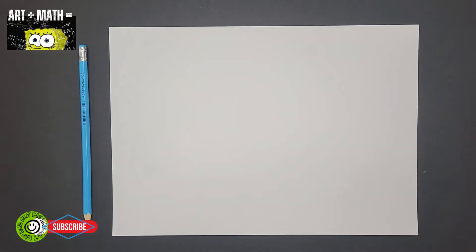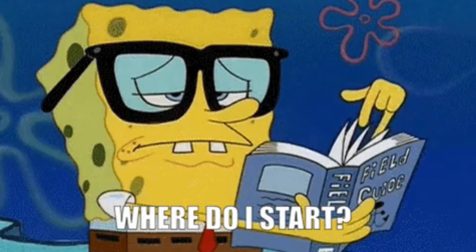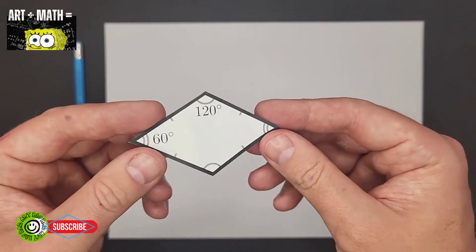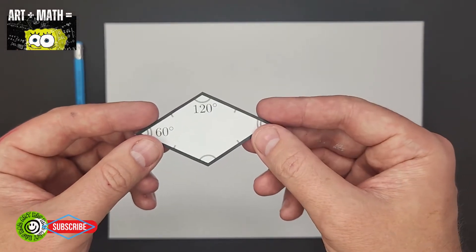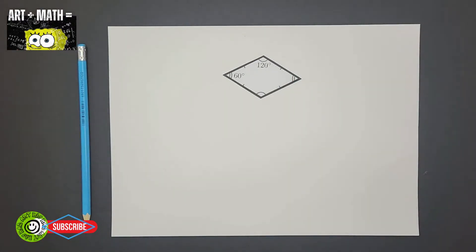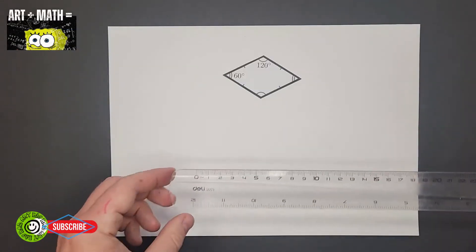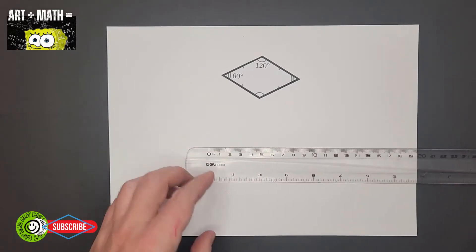Okay, so we are going to draw a rhombus, which is a shape like this. But I'm going to show you a little hack how we can do this. It's like an art sheet, okay. So you need a ruler.